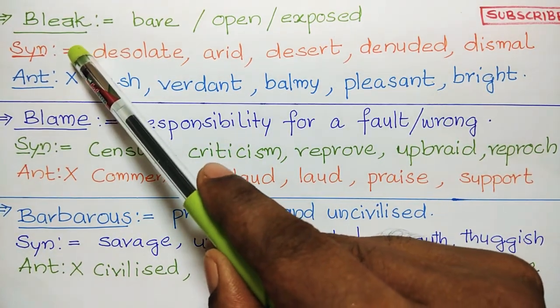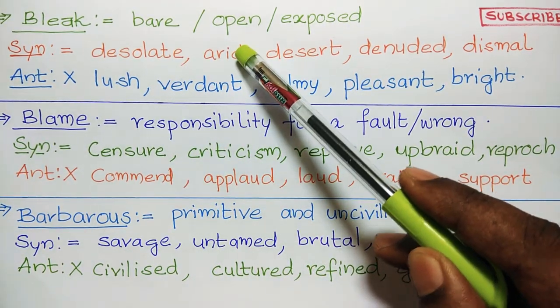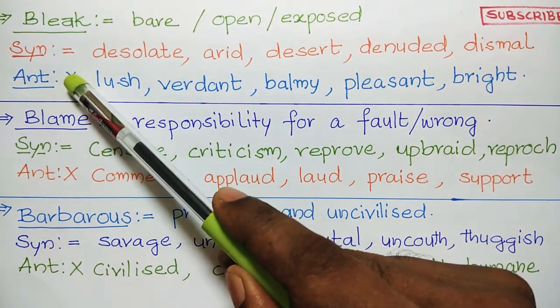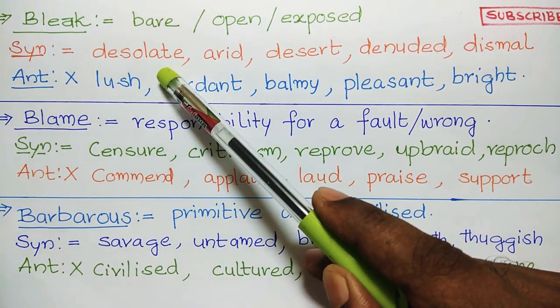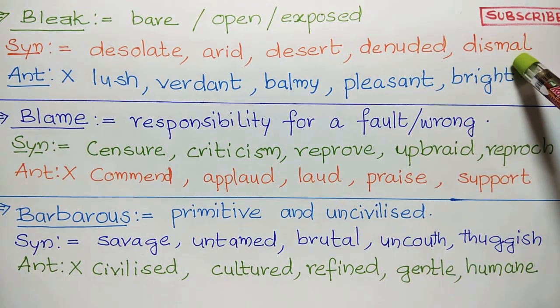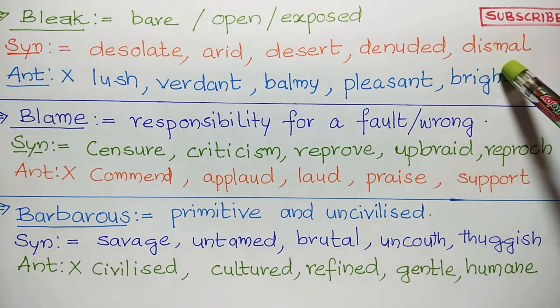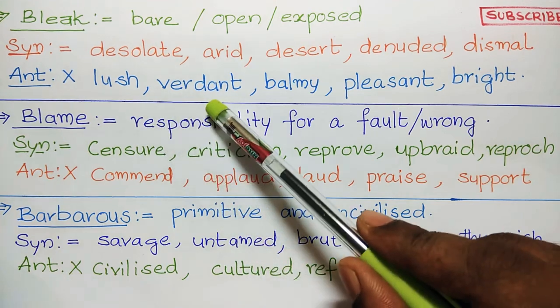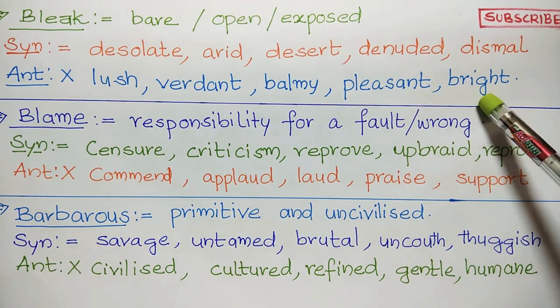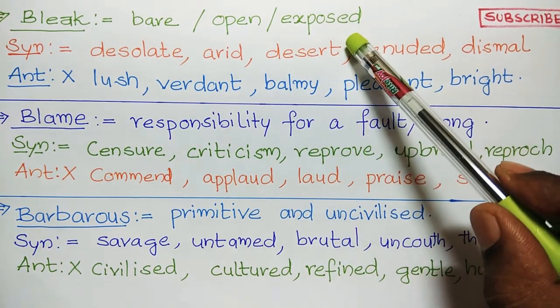Next, bleak. Bleak means bare or open or exposed. Synonyms are desolate, arid, desert, denuded, dismal. Antonyms: lush, verdant, balmy, pleasant, bright.